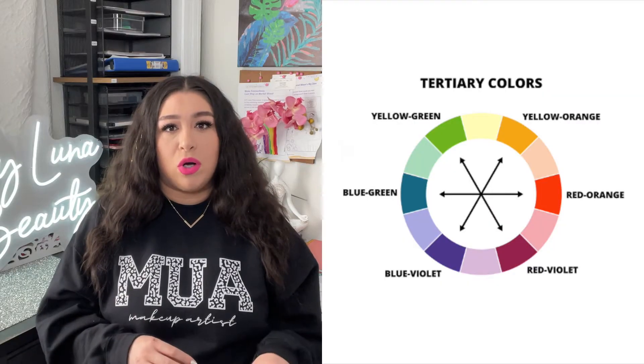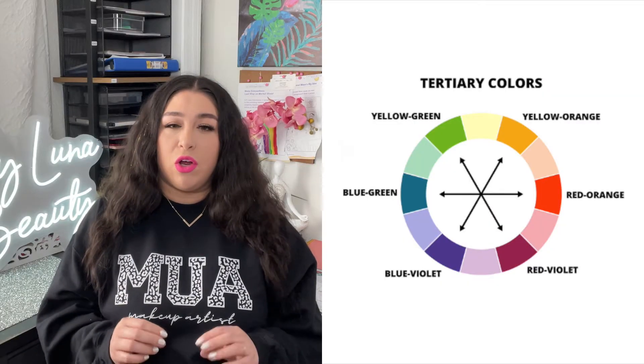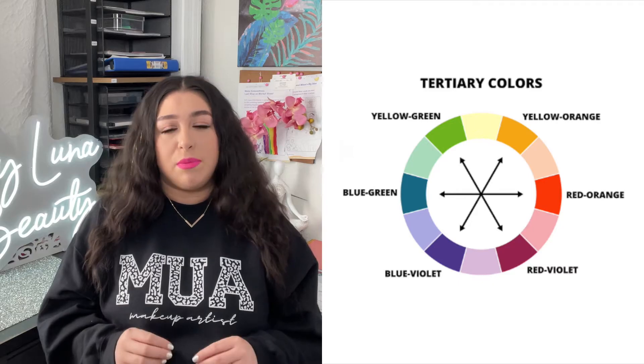Tertiary colors, like red-orange or blue-green, are created by mixing a primary color with one secondary color.